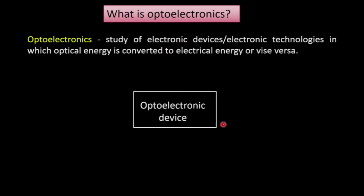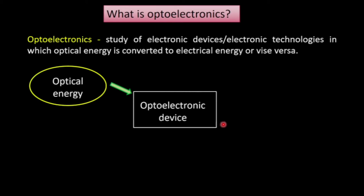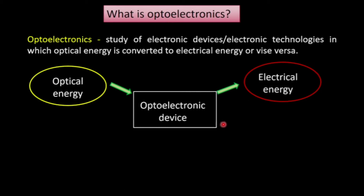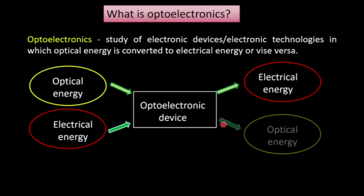Basically, in optoelectronic devices, if we give optical energy as input, the output comes in the form of electrical energy. In some other optoelectronic devices, we give electrical energy as the input, and the output is in the form of light or optical energy. These two transformations occur in optoelectronic devices.